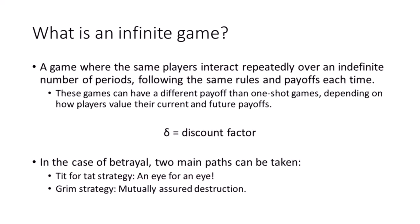In the case of betrayal, two main strategies will be employed in subsequent rounds. A tit-for-tat strategy, where a betrayed player follows up with a betrayal but still maintains cooperation in the following round — essentially the concept of an eye for an eye. The other strategy, which we'll assume is in place here, is called the grim strategy: if a player is ever betrayed, they will choose to never cooperate again. This is similar to the concept of mutually assured destruction.